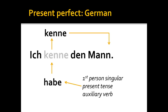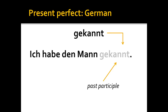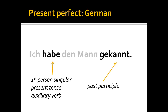Once I remove 'kenne' from the second position, it leaves a gap in the sentence that I need to fill with an auxiliary verb. Here, I'm going to use the auxiliary verb 'habe,' which agrees with the subject of the sentence. Subject 'ich,' first person singular personal pronoun, agrees with the first person singular present tense auxiliary verb 'habe.' So: 'Ich habe den Mann.' Now, what do we do with the verb we took out of the second position, 'kenne'? We change it into a past participle — 'kenne' becomes 'gekannt.' We place the past participle at the very end of the sentence, giving us the present perfect construction: 'gekannt' at the end of the clause, and 'habe' in the second position agreeing with the subject.